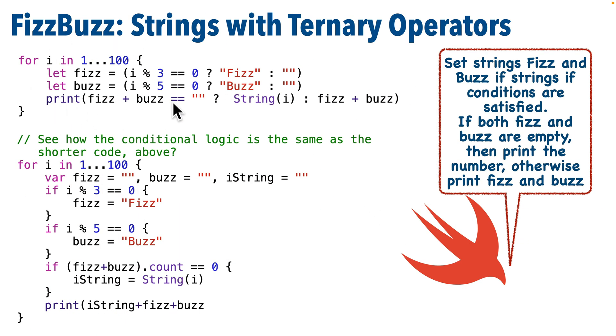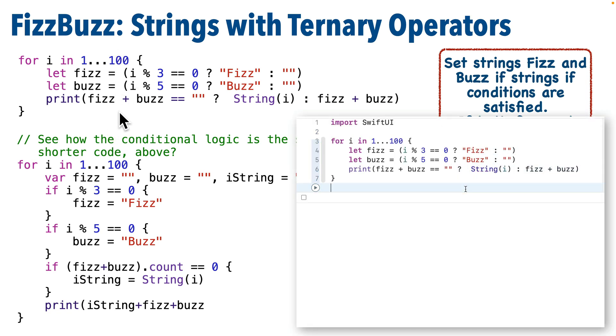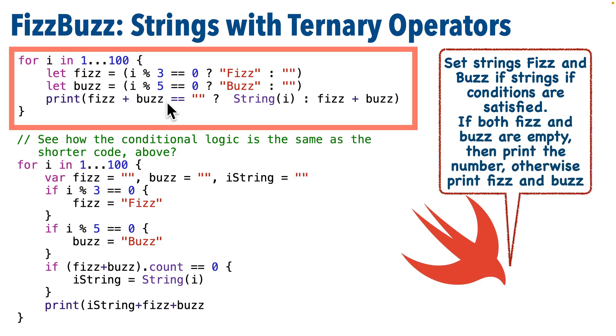Now this approach uses the ternary operator to cut down on the number of lines of code. This block of code down here is the code we just showed on the earlier slide, but up here is pretty much the same logic using the ternary operator instead of if, else, if statements, and it uses fewer lines of code.